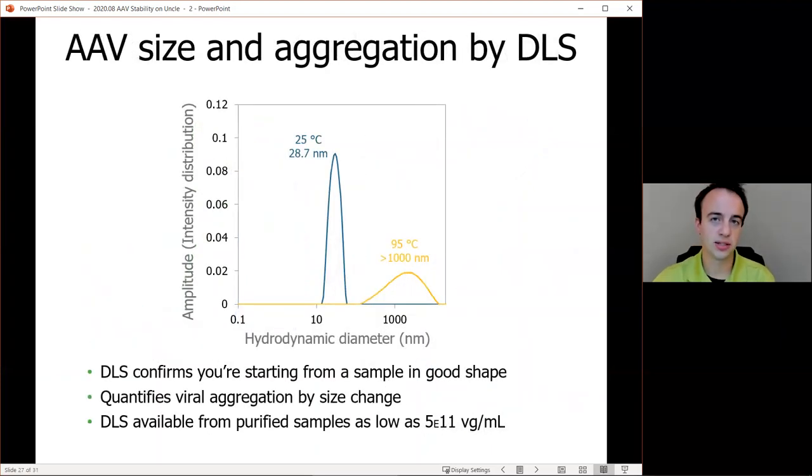Since we also do DLS reads during our capsid stability runs, we can get information on if your capsid during this experiment started as a homogeneous monodispersed capsid or if it was suffering from aggregation issues already at the start of it. You can also confirm at the end of the experiment that sample aggregation has occurred.